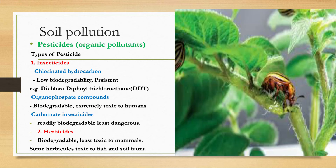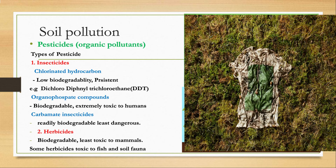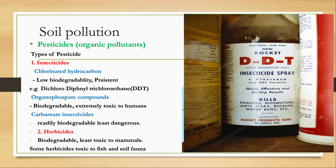Insecticides are used to control insect pests in agriculture. Organic insecticides are classified into three groups. The first is chlorinated hydrocarbons, which are persistent and have low biodegradability. Biodegradability means a material is decomposed over time by microorganisms. An example of chlorinated hydrocarbons is DDT, dichlorodiphenyltrichloroethane.